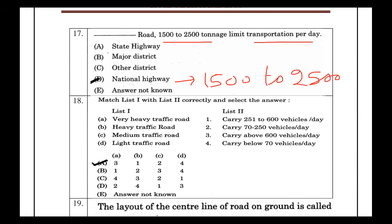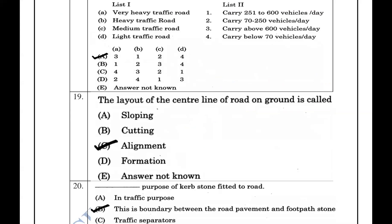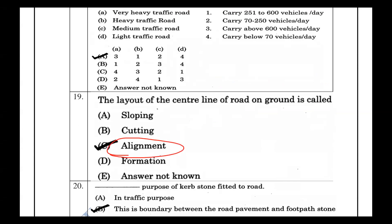For traffic volume classification: very heavy traffic is above 600 vehicles per day; heavy traffic is 250 to 600; medium traffic is 72 to 250; and light traffic is below 70 vehicles per day. The layout of the center line of the road on the ground is called road alignment.